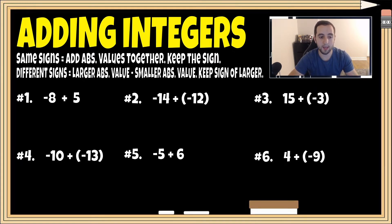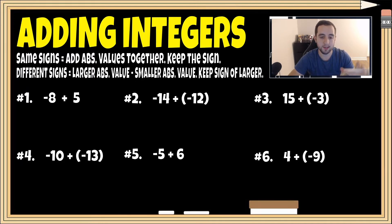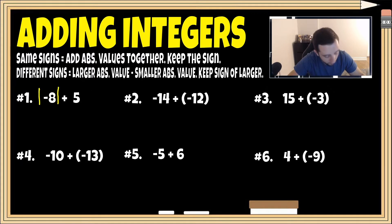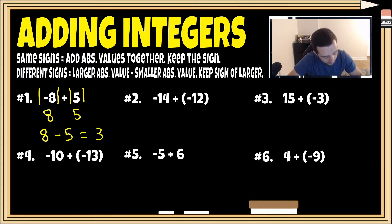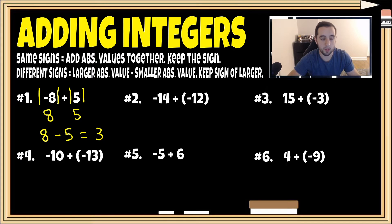For number one, we have negative eight plus five. These are different signs — eight's negative, five's positive — so I'm gonna utilize the different signs rule. It tells us to take the larger absolute value minus the smaller absolute value. The absolute value of negative eight is positive eight, and the absolute value of five is five. Eight minus five gives us three. And we keep the sign of the larger absolute value — eight was originally negative — so our answer is negative three.